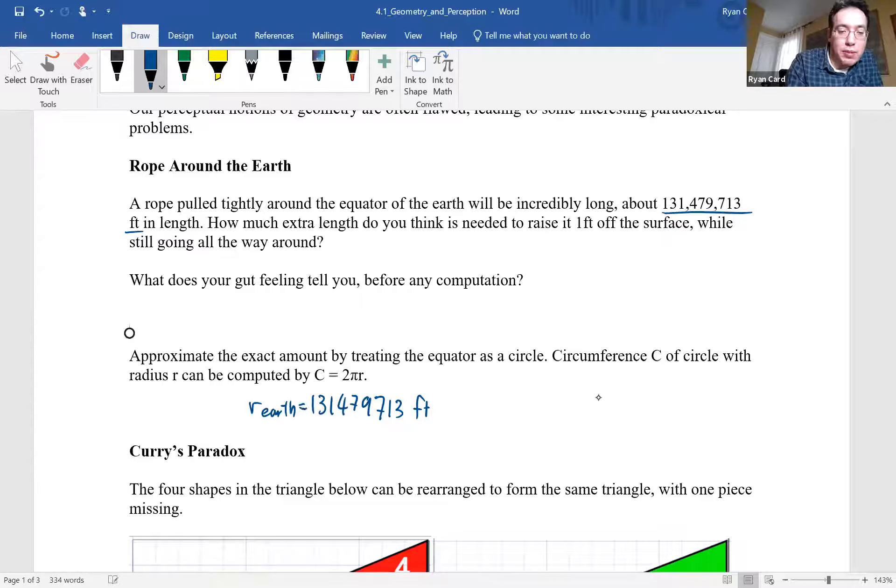Let's work at it. So we already have the circumference of the Earth, that's 131,479,713 feet. That's the circumference of the Earth. That's our C, and using that, we can actually compute the radius of Earth. I mean, we can Google that, but we could also compute it. To solve for R here, we just have to take our C and divide by 2π.